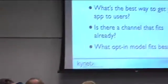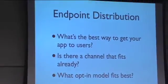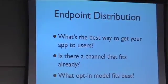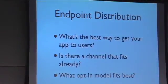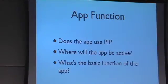Some things to consider in terms of endpoint: one is distribution — what's the best way to get your app to users? Is there a channel that already fits? It may make sense to publish it into a community that already exists. Also consider what opt-in model fits best, so you don't pick an endpoint that has an opt-in model that doesn't fit your application function.